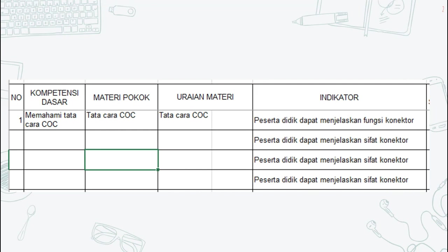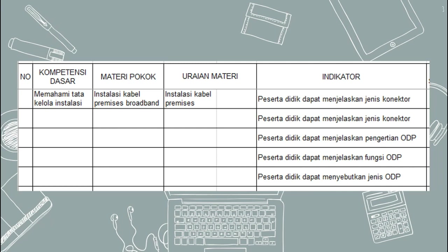Nah di sini nanti diminta untuk menjelaskan sifat dari konektor. Untuk memahami tata kelola instalasi, materi pokok dan uraian materinya yaitu instalasi kabel premis broadband. Indikatornya masih di menjelaskan jenis konektor.